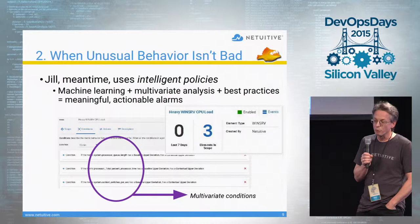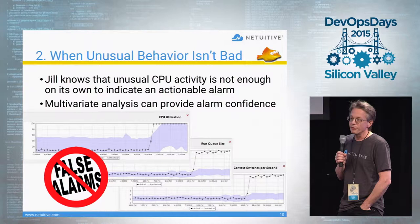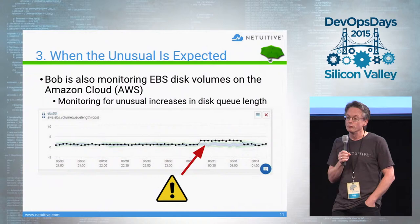Because CPU activity by itself is not necessarily enough to know that you have an issue. Multivariate analysis of CPU, however, in conjunction with things like run queue size and context switches per second, can give you a good indication of a CPU server that's running hot.